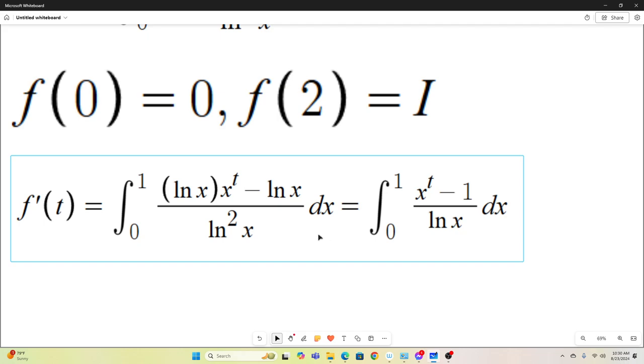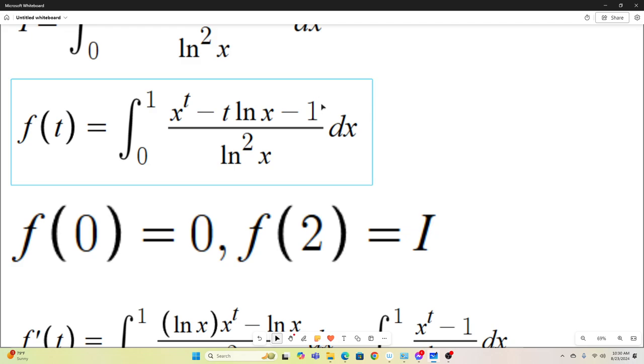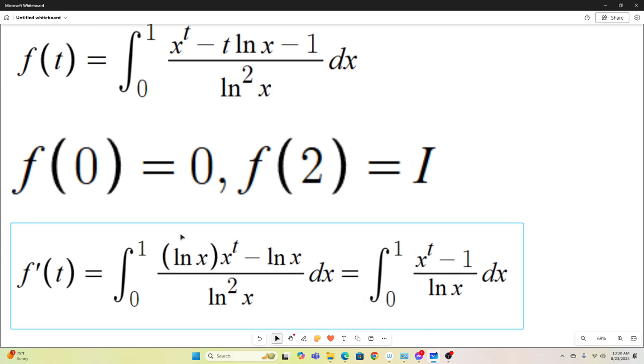We differentiate with respect to t under the integral sign. That just means we take the partial with respect to t of this integrand and leave the rest alone. And that will give us f prime of t. And you can see that I did that right here. Taking the derivative of this will recover a natural log x. Taking the derivative of this will just leave a natural log x. So this is what we end up with. Natural log x, x to the t, minus natural log x over natural log squared x from 0 to 1 dx. And you can see that we have a common factor of natural log x in the numerator and denominator. So those will cancel out, giving us nothing but this integral right here.